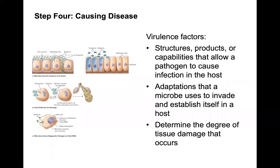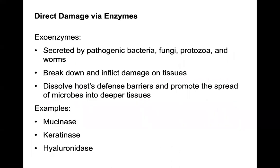Step four is causing disease through virulence factors. These are structures, products, or capabilities that allow the pathogen to cause an infection in the host — adaptations used to invade and establish itself and to determine the degree of tissue damage. One example is direct damage by exoenzymes, which are secreted by pathogenic bacteria, fungi, protozoa, and worms. They break down tissues, dissolve host defense barriers, and promote spread of microbes into deeper tissues.